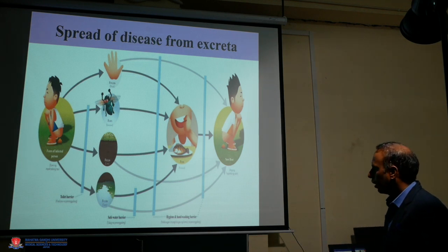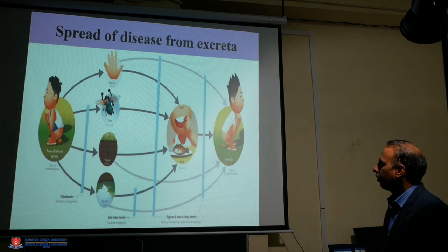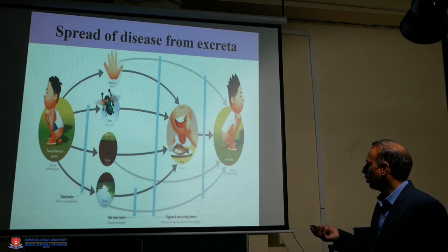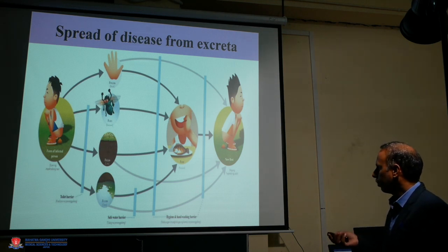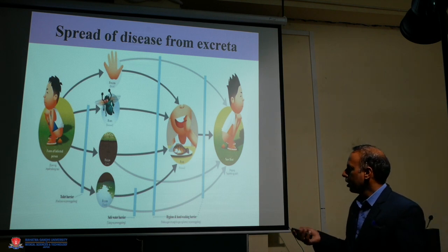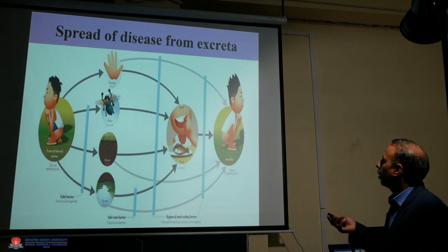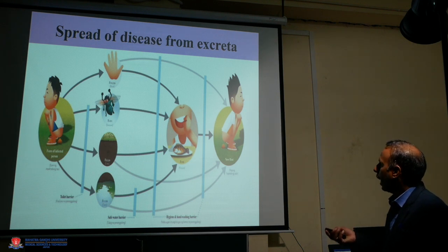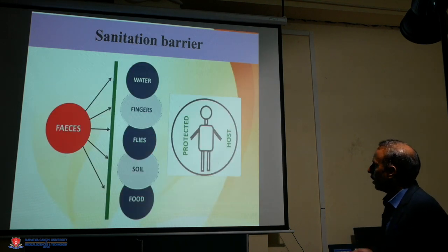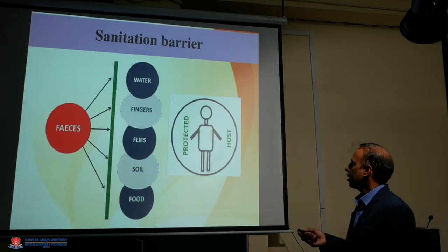If a person defecates in the open field, the excreta comes into contact with flies, fingers, soil, and fish, which leads to contaminated food. If that contaminated food is consumed by the human body, it becomes the carrier of disease from the excreta to the human body.